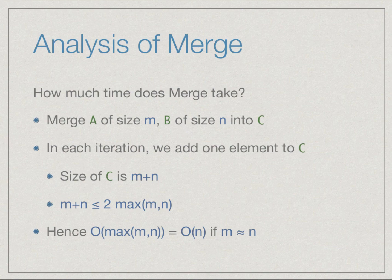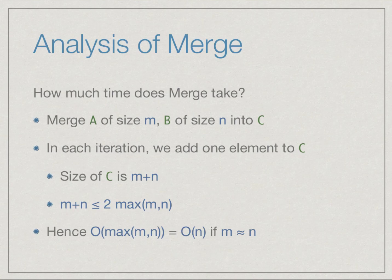What do we do in each iteration? We do a comparison, then an assignment, then increment some indices. This is a fixed number of operations, a constant operation. So the total amount of work is proportional to m plus n.